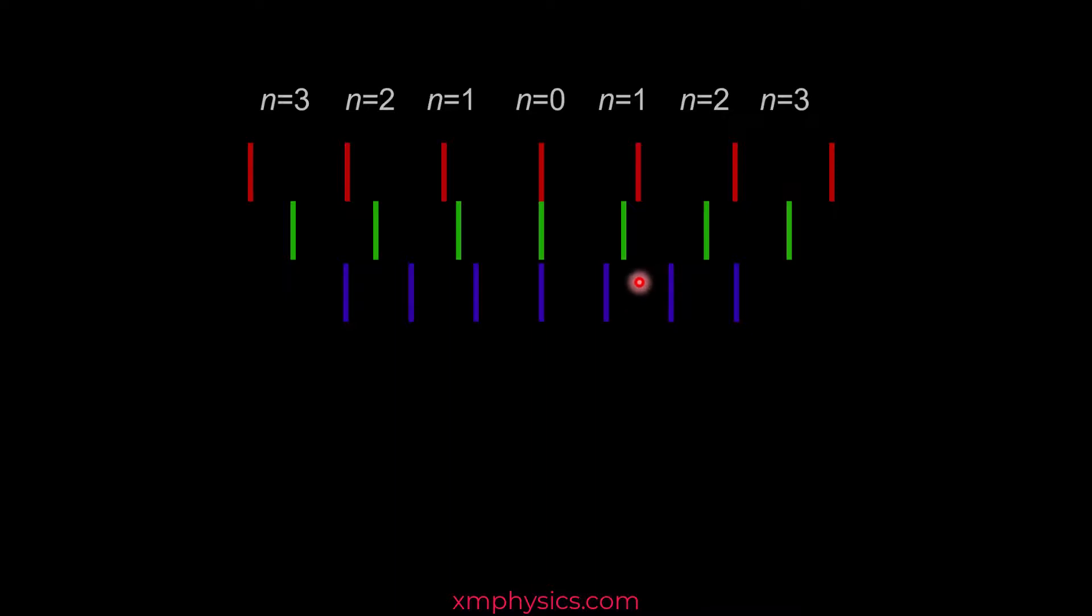If you're wondering why the different color lights do not form the bright fringes at the same position as well, it's because d sin theta equals n lambda. So blue lights with the shorter wavelength will have its bright fringes formed at smaller thetas. That's why the first order blue fringe is formed before the green, which is formed before the red.